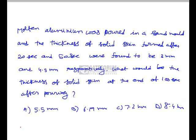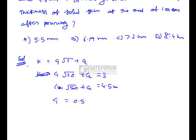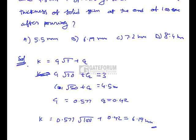We need to find the thickness of the solid skin at the end of 100 seconds after pouring. The thickness of solid skin is given by C₁√T + C₂, where T is the time. Using the two conditions — 3 mm at 20 s and 4.5 mm at 50 s — we get C₁ = 0.577 and C₂ = 0.42. The solid skin thickness after 100 seconds equals 0.577√100 + 0.42 = 6.19 mm, so the right option is B.